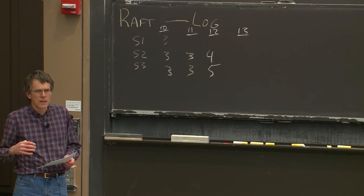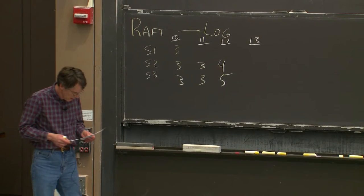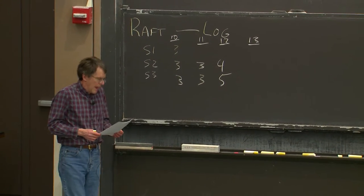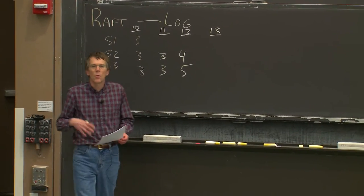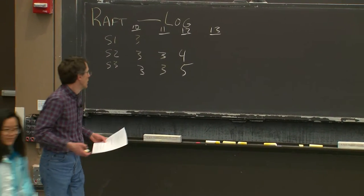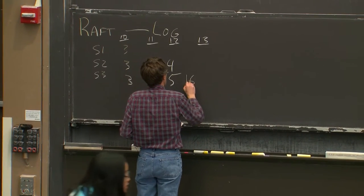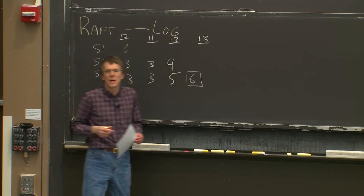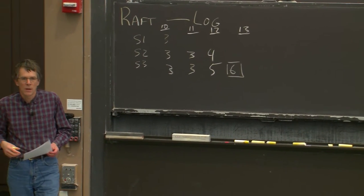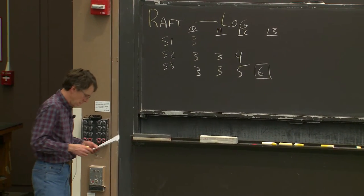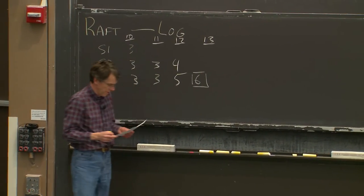Let's imagine that server S3 is chosen as the leader, so we have a new leader for term 6. At some point, S3 — the new leader — is going to want to send out a new log entry. Let's suppose it wants to send out its first log entry for term 6. We're thinking about the AppendEntries RPCs the leader will send to carry the first log entry for term 6, which should be under slot 13.